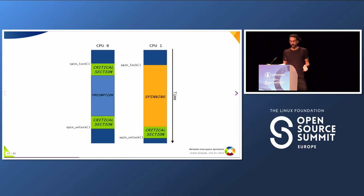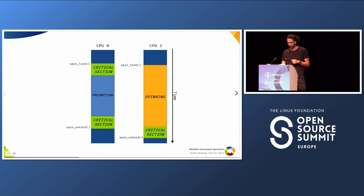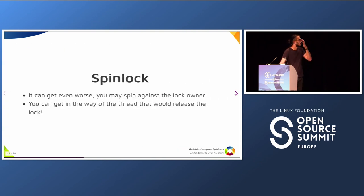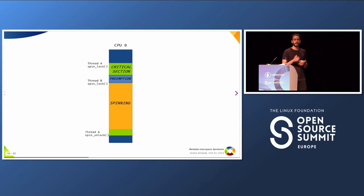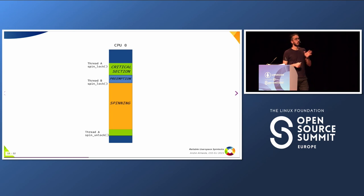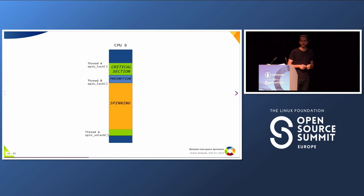Then the scheduler needs to give the thread its time slice back so it can finish the job and unlock the spin lock. And there is an even worse scenario: you may be spinning against the lock owner. Let's say thread A and thread B are both running on CPU 0. Thread A gets the lock and thread B is preempted on the same CPU. Now you start spinning, but you're spinning for something that is not on any CPU — so you're spinning for something that is not going to be released. You're just wasting CPU cycles and getting in the way of thread A, making it even less likely the lock will be freed.